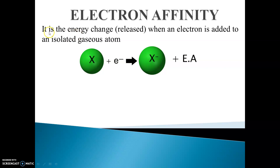So what is electron affinity? It is the energy released when an electron is added to an isolated gaseous atom. For example, if an X atom accepts or gains one electron, it becomes an ion and some amount of energy is released, and that energy is called electron affinity.